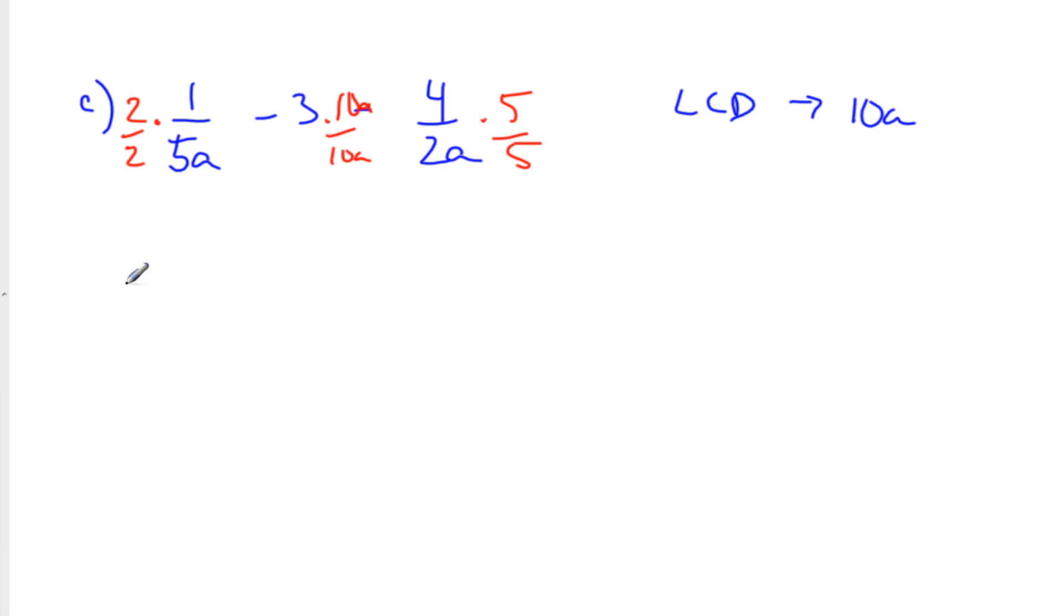So in doing that, I get... Okay. So what have we got? 2 over 10a minus 30a over 10a. Does that have minus? A minus. Yep. 20 over 10a. So I can put all this over 10a. Yep. And I get 2 minus 30a minus 20.